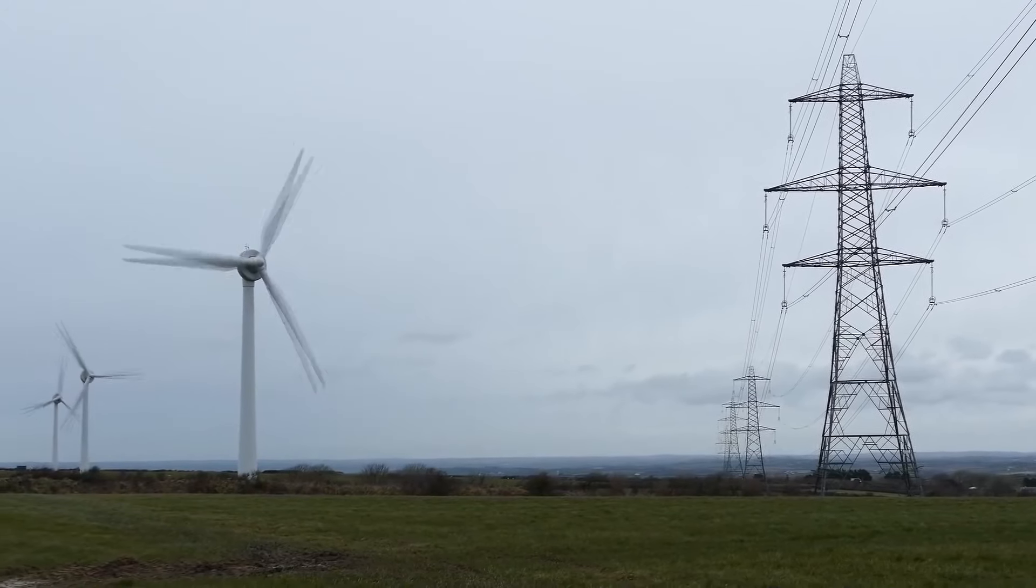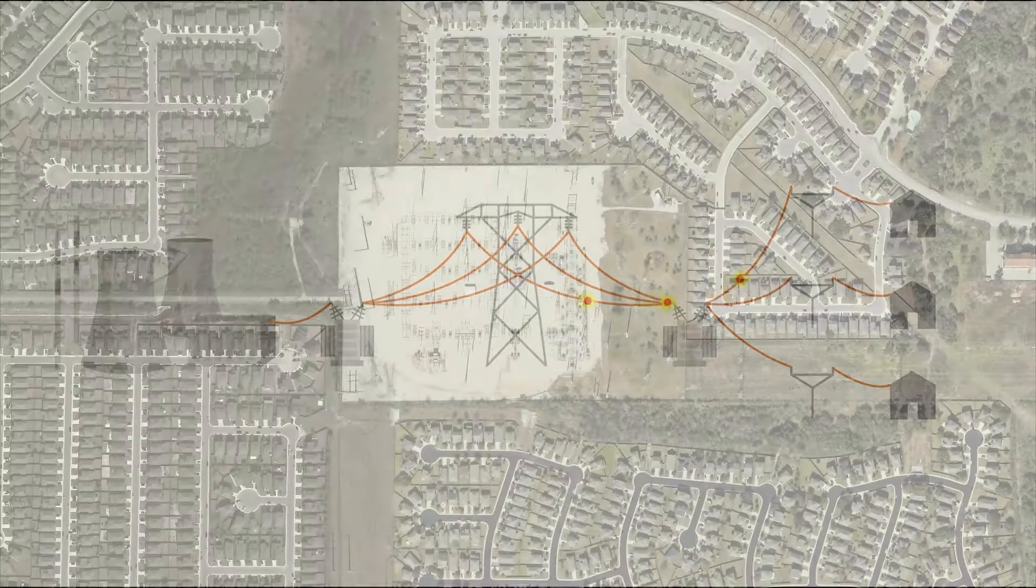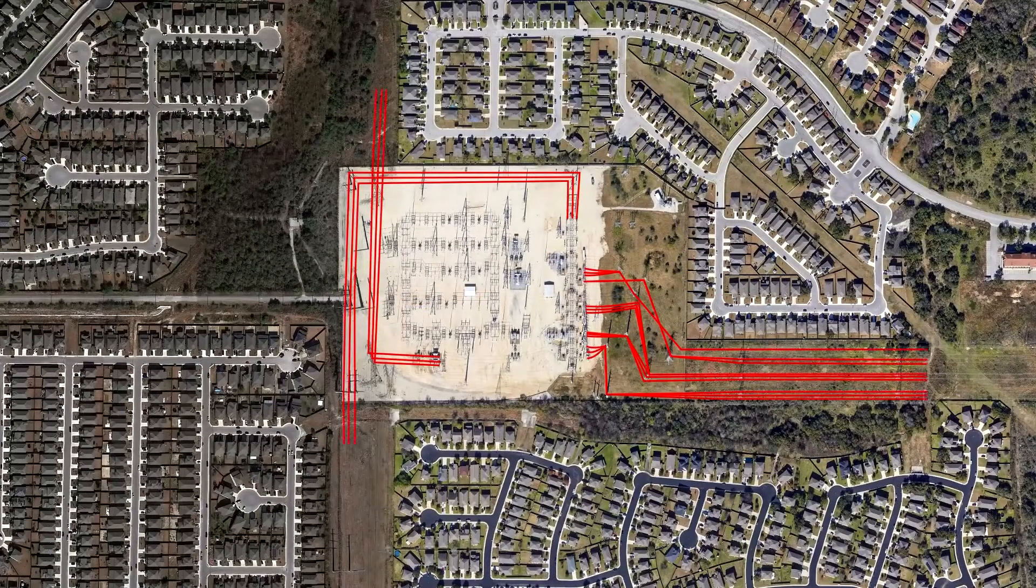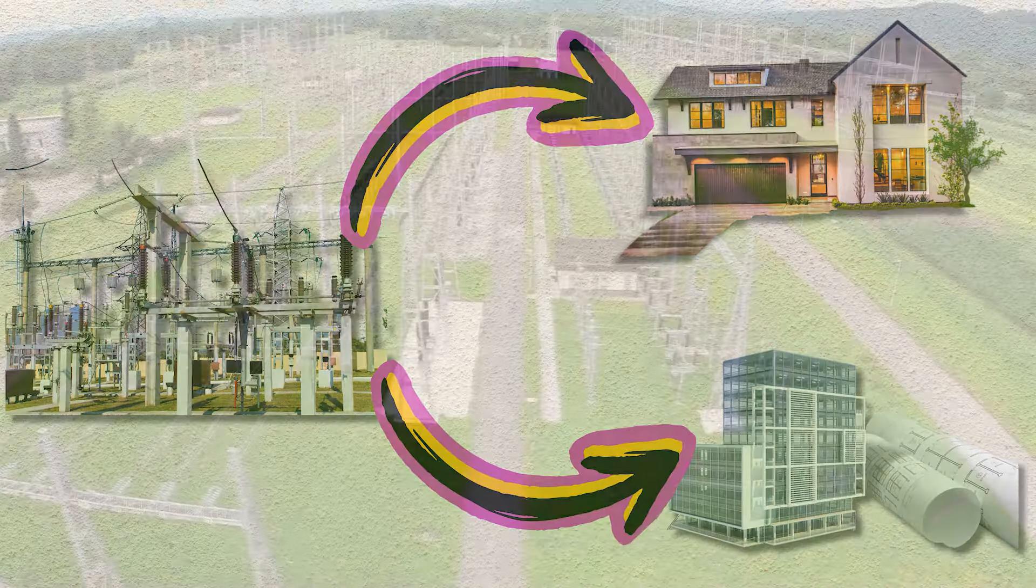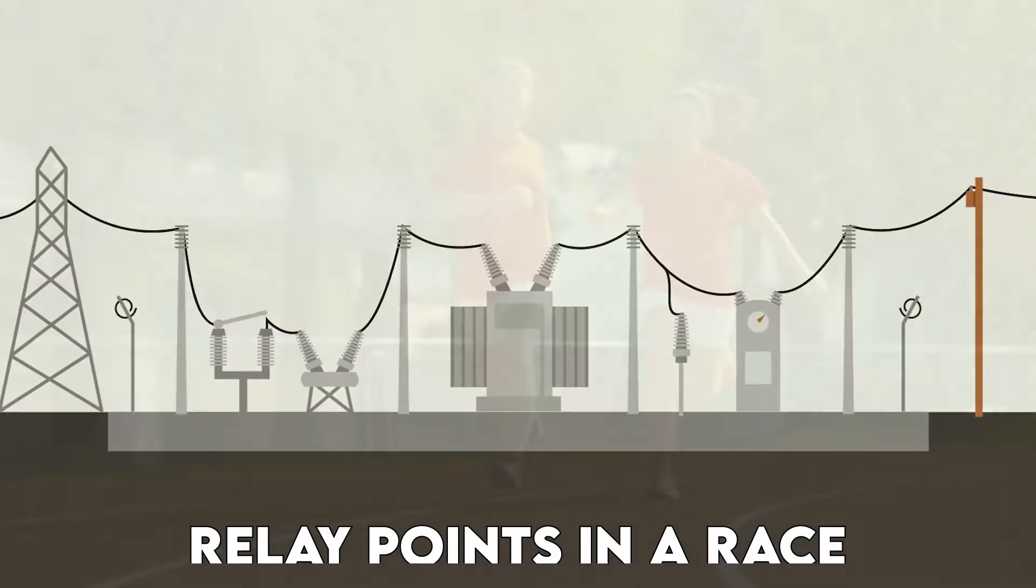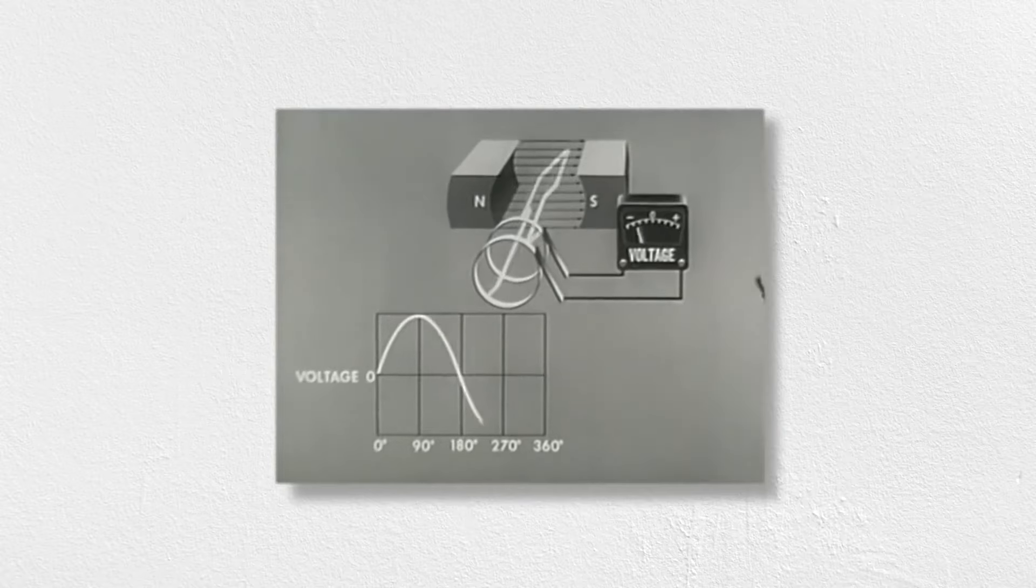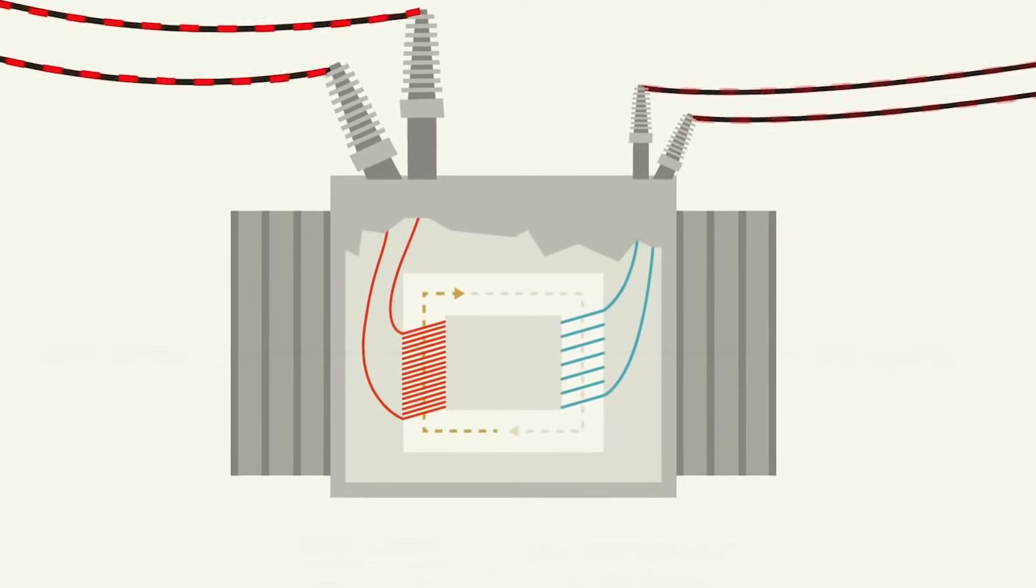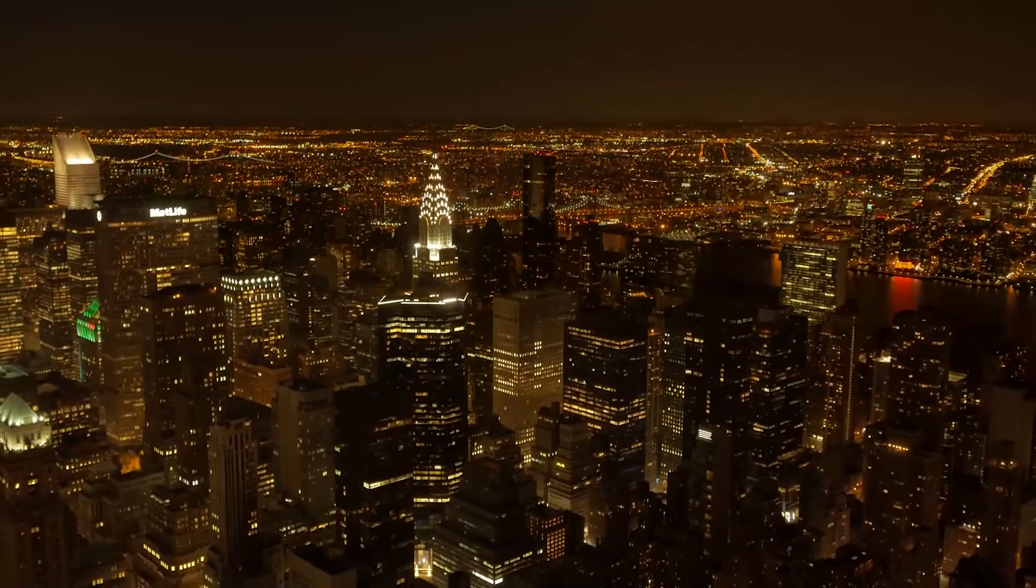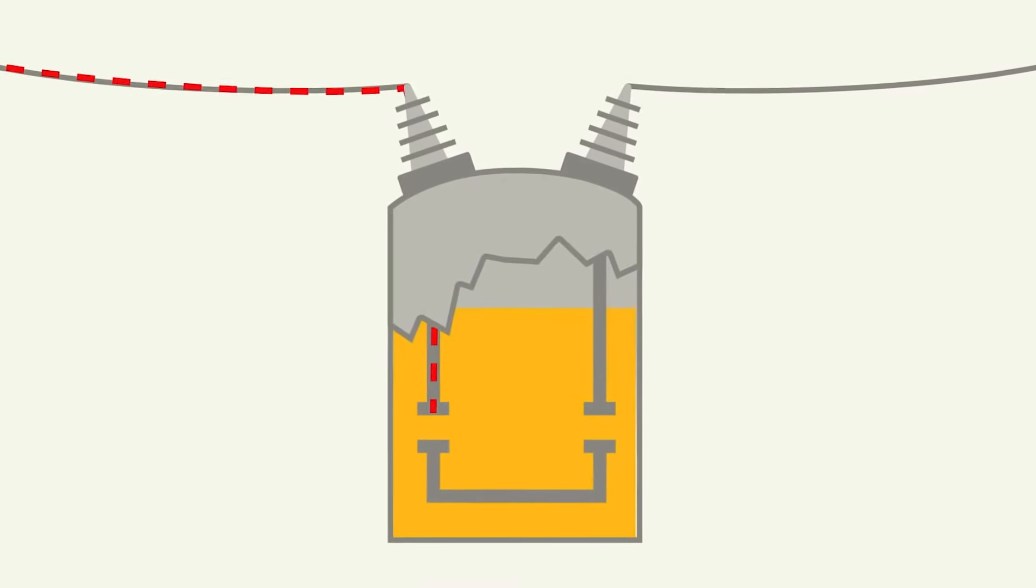As electricity continues its journey it encounters substations which serve as crucial energy pit stops along the way. These substations play a pivotal role in maintaining the integrity of the energy grid and ensuring a consistent flow of electricity to our homes and businesses. Think of substations as relay points in a race where the baton is passed from one runner to the next. At these substations voltage levels are adjusted and the electricity is redistributed. Substations are equipped with transformers that can step up or step down the voltage depending on the requirements of the region. This ensures that the electricity reaches its intended destinations at the right voltage levels, ready for safe and efficient use.